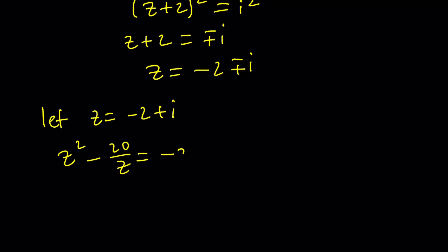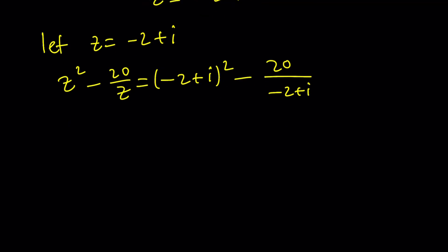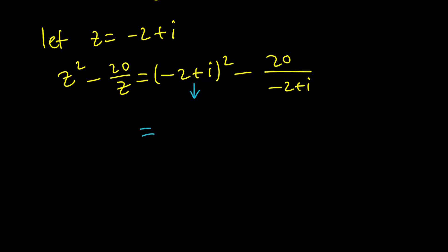z squared minus 20 over z is going to be negative 2 plus i quantity squared minus 20 divided by negative 2 plus i. Notice that the double negative is going to turn this into a positive quantity. So let's square this first. You can also think of it as 2 minus i squared. It's a little easier to do.